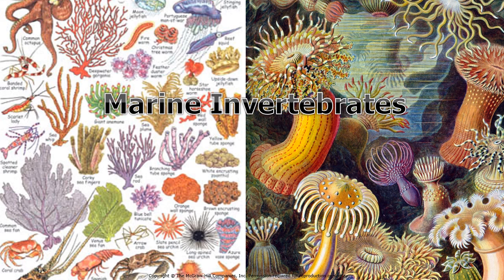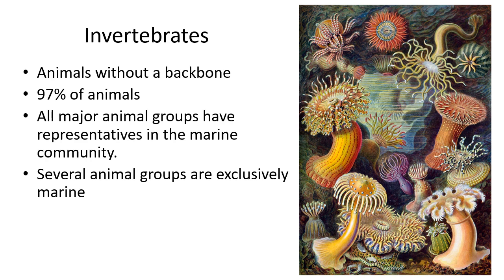The word invertebrate means it doesn't have vertebrae, it doesn't have a backbone, which is an interesting qualification because most things in the ocean, most animals, are in fact invertebrates. So this naming is simply out of convenience because we are selfish human beings and try to categorize everything towards ourselves. 97% of animals are invertebrates.